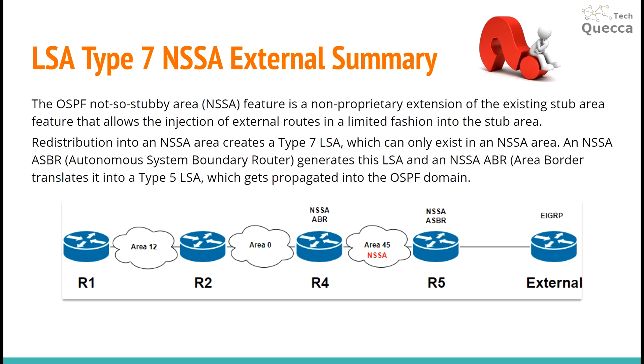The NSSA ASBR generates this Type 7 LSA, and the NSSA ABR translates it into a Type 5 LSA, which can then be propagated into the OSPF domain.